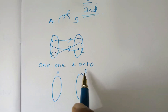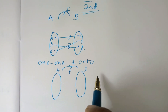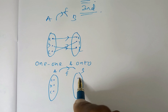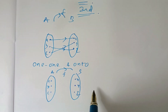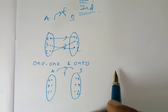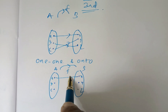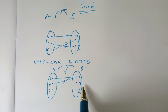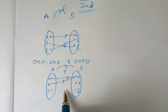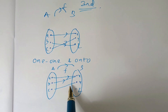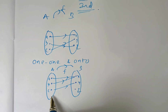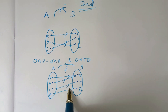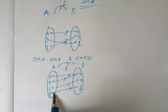Let us consider another example. This is set A, this is set B, and there is a mapping from set A to set B. Let A, B, C be points in set A and X, Y, Z be points in set B. Let X be the image of both A and B, and Y be the image of C.